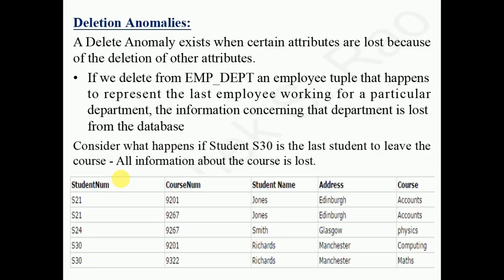Deletion anomaly: if we delete a particular student from the relation, the course number and all other course information also gets deleted. Assume only one student is enrolled for a particular course — if we delete that student, the course also gets deleted, which we don't want. This is a deletion anomaly caused by poor database design.